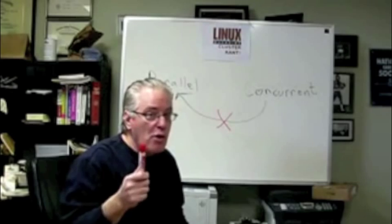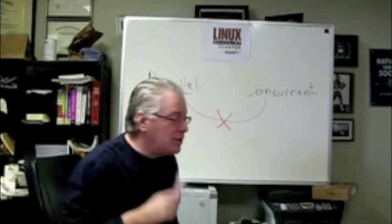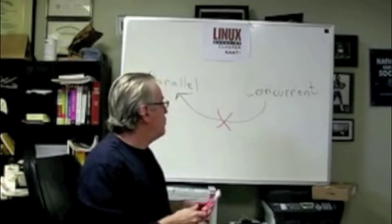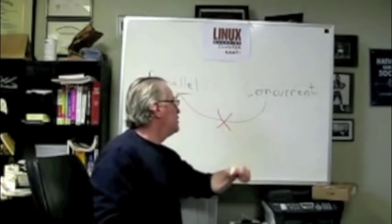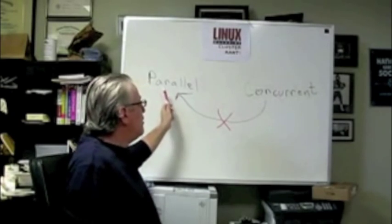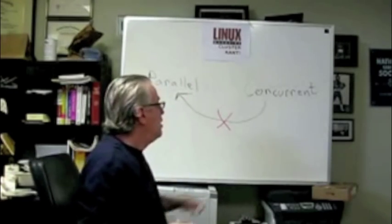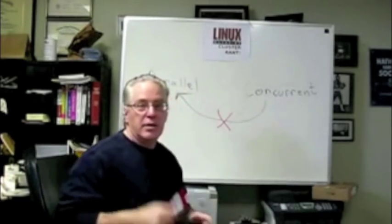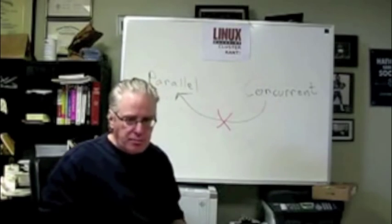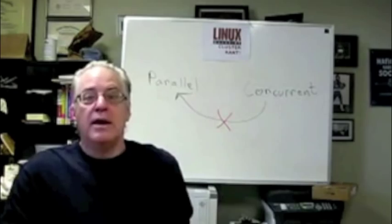And we're going to find this over and over as one of the big issues in high-performance computing and computing in general. So remember, concurrent does not always imply parallel. Parallel is a function of the machine, a property of the machine we're going to talk about. Concurrent is a property of the algorithm or the process. Okay, got that? Good.